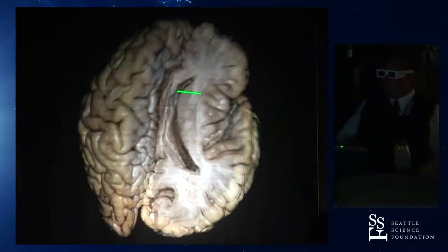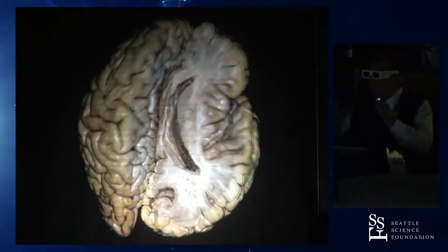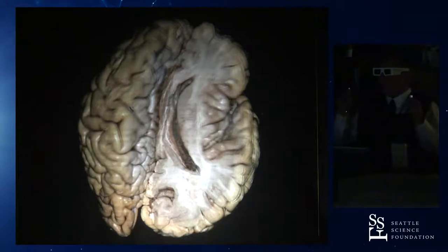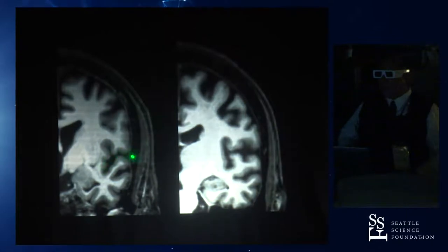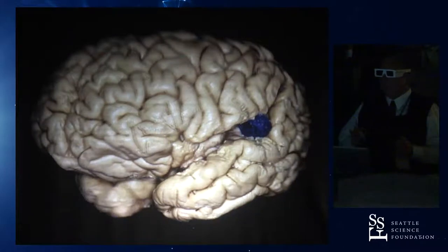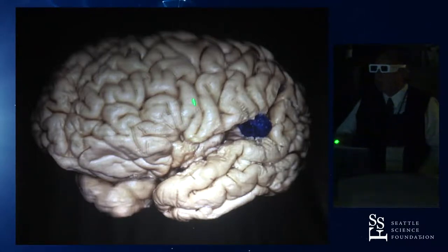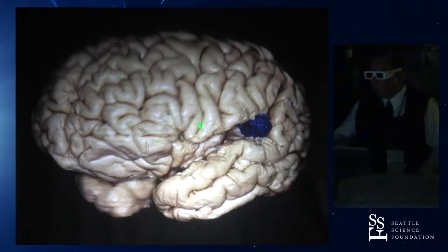So if you have a coronal cut anterior to the Heschl gyrus, you're going to see the fissure oblique; if you have a coronal cut posterior to it, you're going to see the fissure flat. You always have to look at MRIs anatomically. If I see the fissure like this, I'm anterior to the Heschl gyrus; if I see it flat, I'm in the temporal plane. This is another specimen — what is the beautiful U here? The opercular part. And the triangular part.